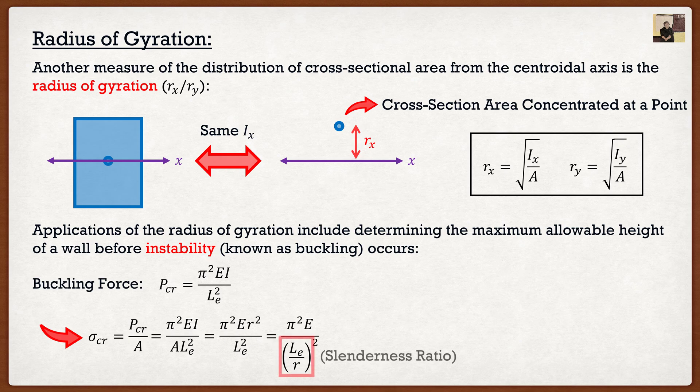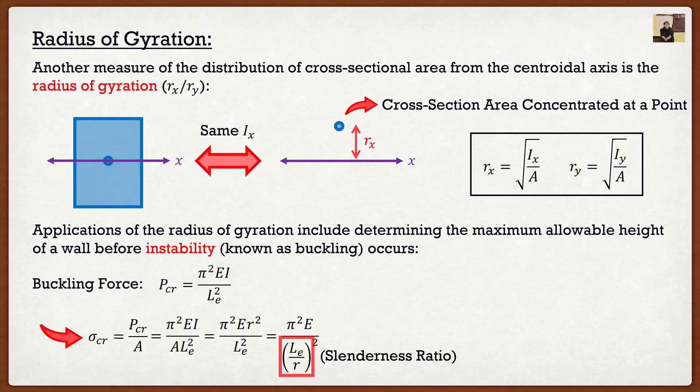This is actually called our slenderness ratio. If you look at concrete, steel, masonry, timber, all of them have specific rules regarding slenderness ratios. Because what happens is the higher the slenderness ratio of your structure is, the chances are it's going to buckle. You don't want things to buckle, it provides no warning, and it's basically just a collapse.